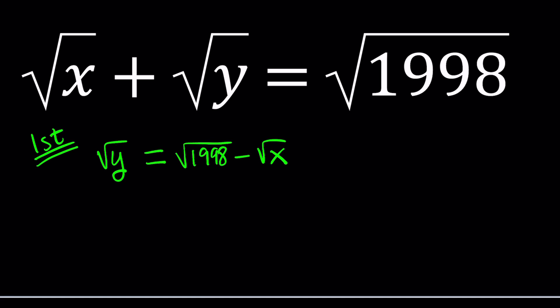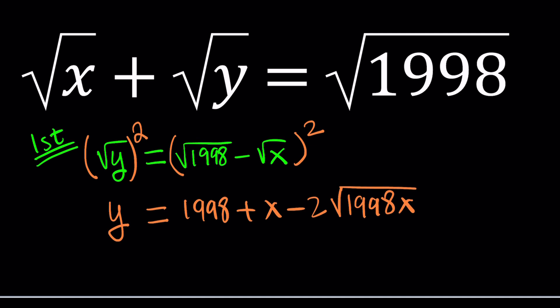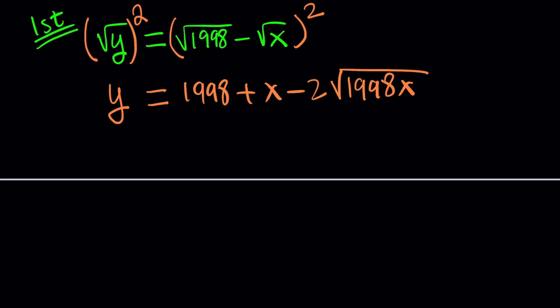What do you think the next step is? Squaring both sides, of course. This gives us y equals — and you're squaring a difference, so be careful — it's a² + b² − 2ab. We can write the product under one radical. So this is y in terms of x, which is nice.